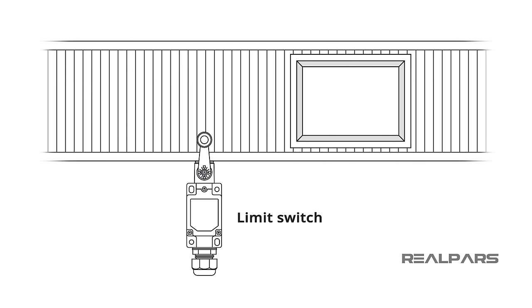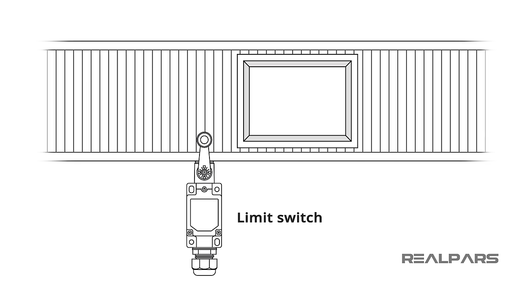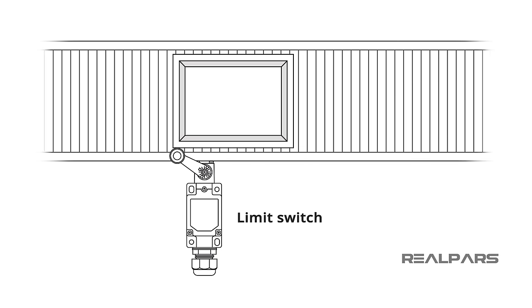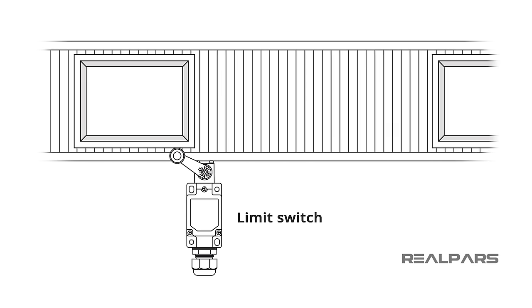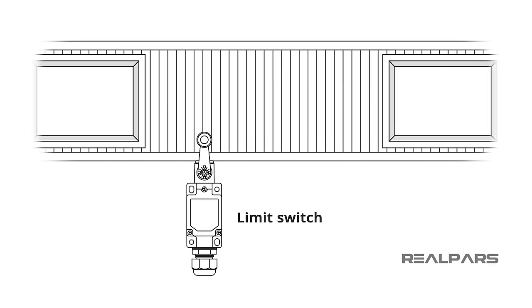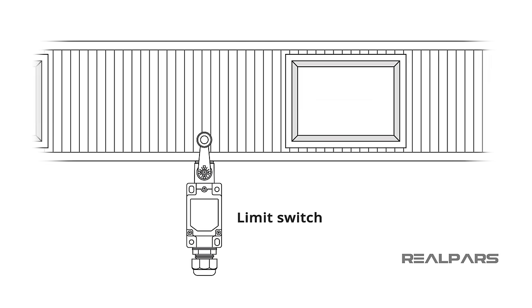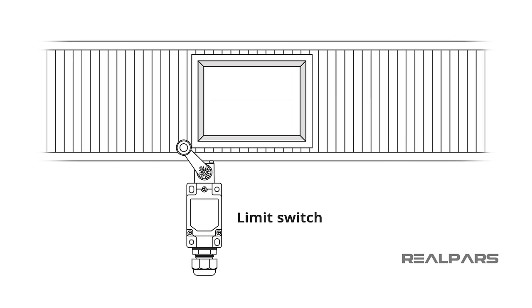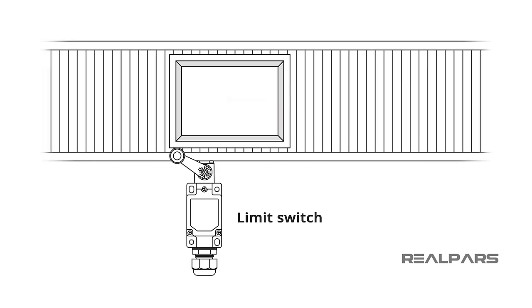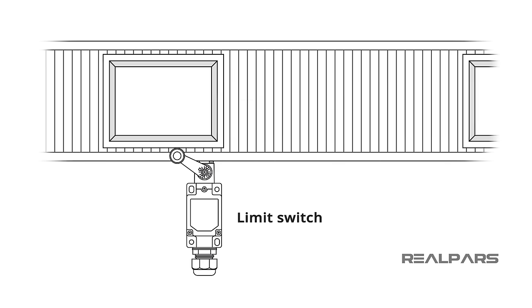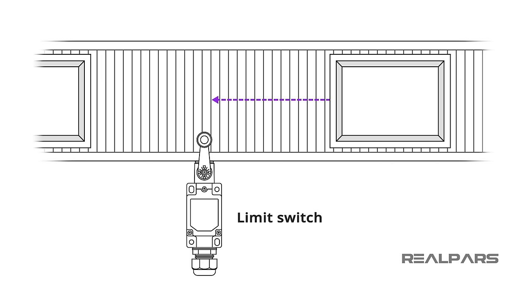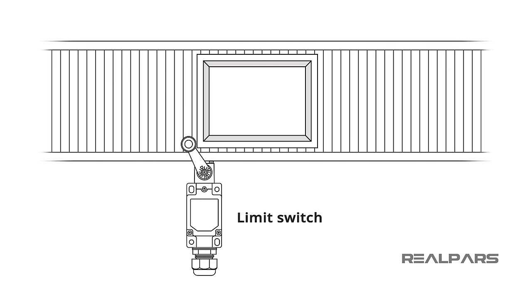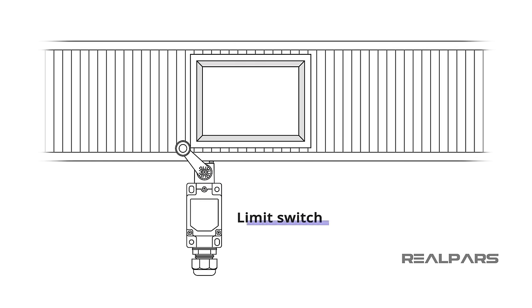Let's get started. A limit switch is an electromechanical device operated by a physical force applied to it by an object. The limit switch is used to detect the presence or absence of an object. These switches originally used to define the limit of travel of an object, and as a result, they were named Limit Switch.